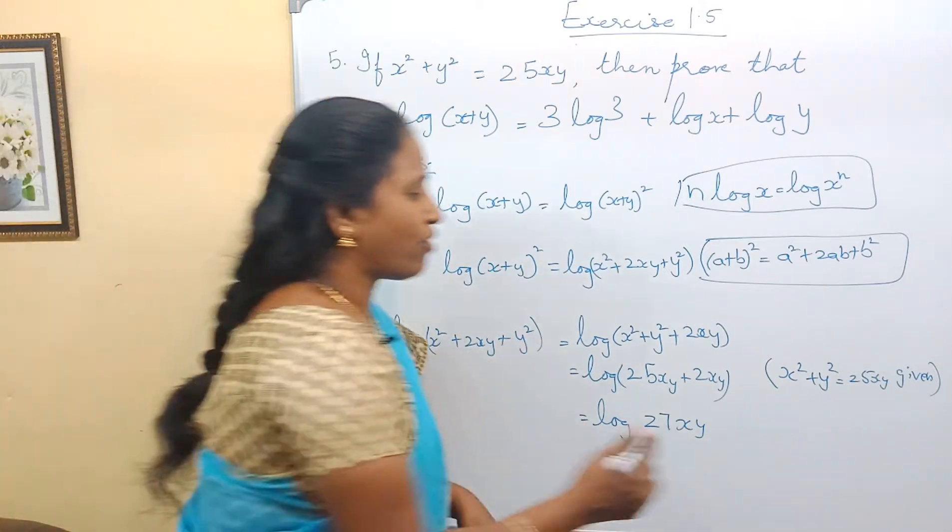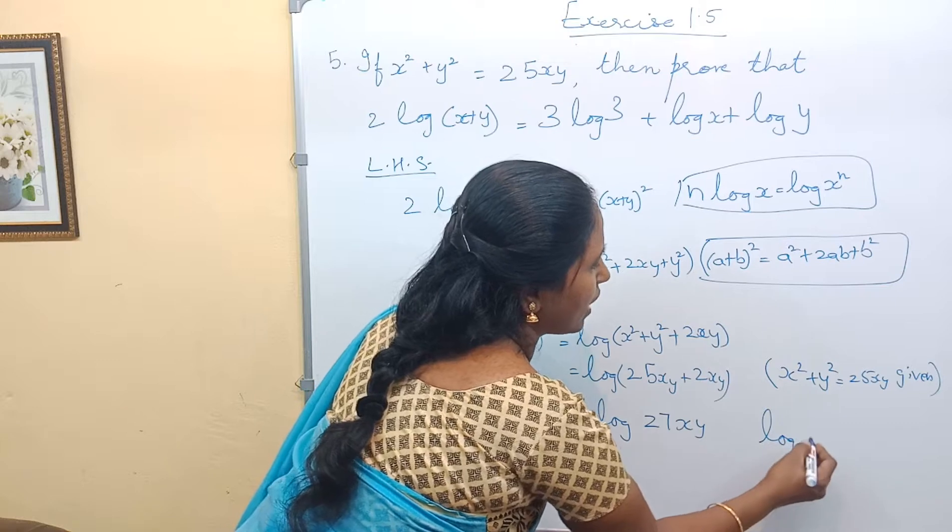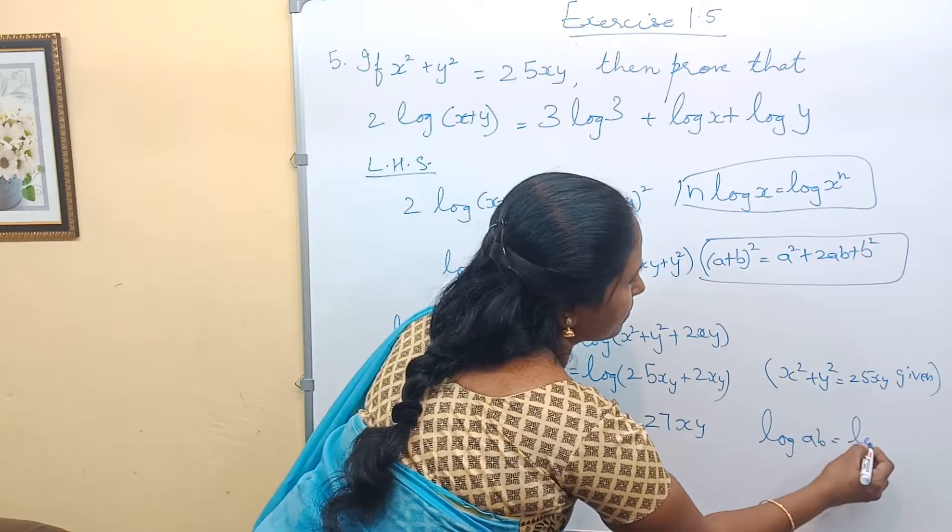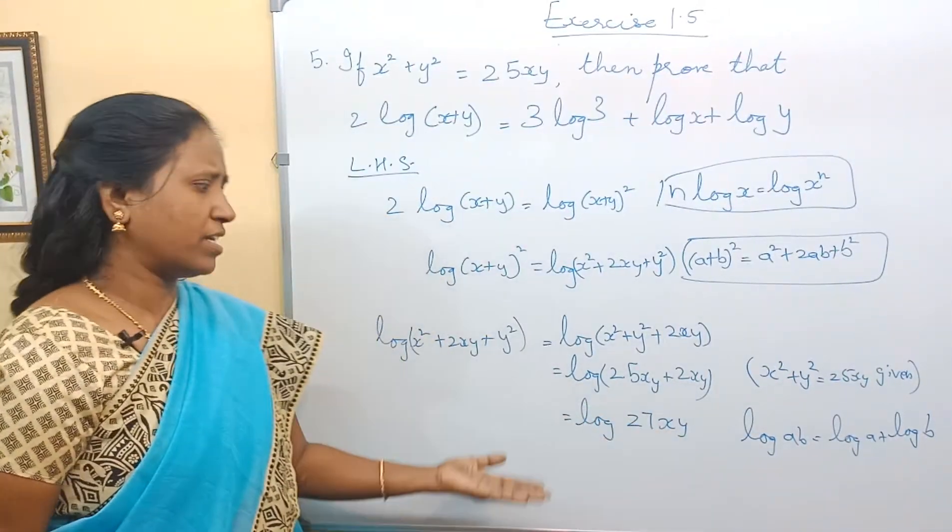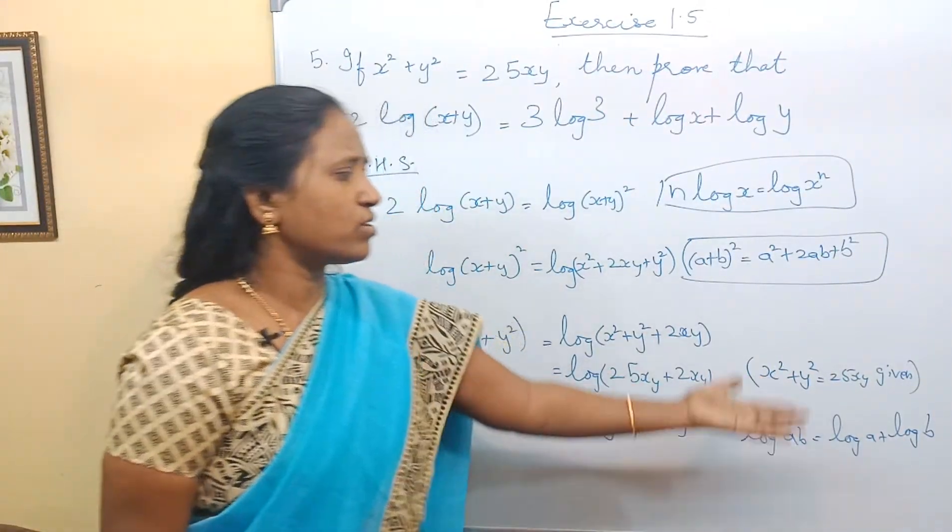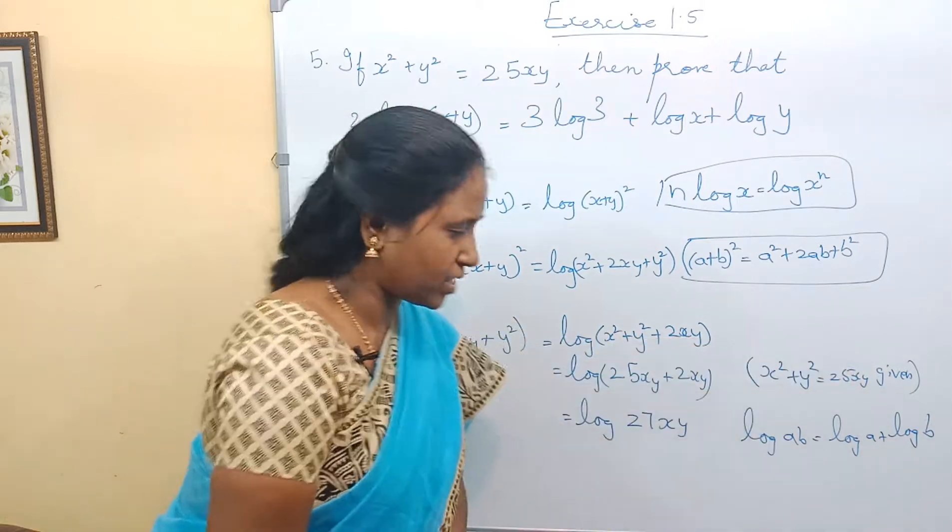Now it is in the form log(ab), which is nothing but log a + log b. Now we have three terms. That is, log(abc) is log a + log b + log c. Right?